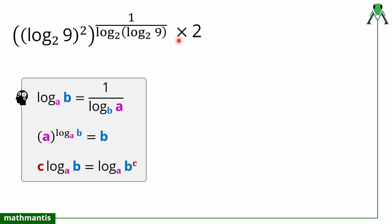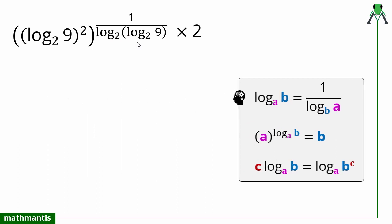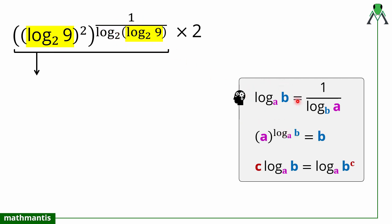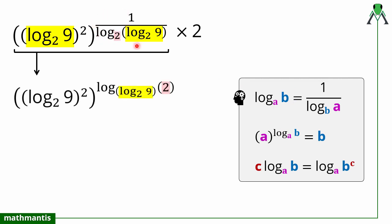Now we will simplify the front expression. Applying the same approach, I can see the base here is log base 2 of 9, and the same value log base 2 of 9 also appears in the exponent. So I will try to create a logarithmic expression whose base is log base 2 of 9. I will use the first property — the base change — to bring the expression to the numerator, so the base becomes log base 2 of 9 and 2 becomes the argument.